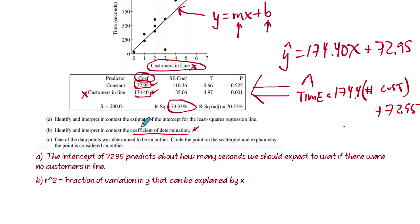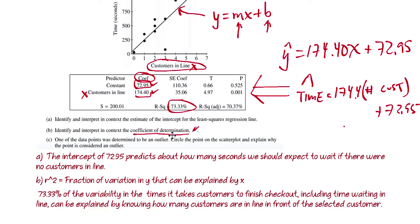73.3% of the variation in time. So we want to put it in context. So I would put that as 73.33% of the variability in the time it takes customers to finish checking out, including the time waiting in line, can be explained by knowing how many customers are in line in front of the selected customers. So we're just taking the fraction variation in y that can be explained by x. We're taking what y is, and in context, what is y, it's the time it takes customers to finish checking out. I mean.